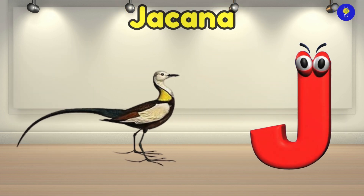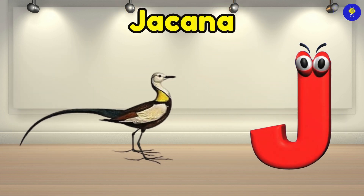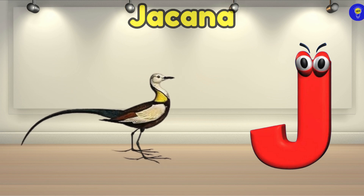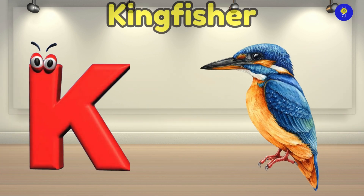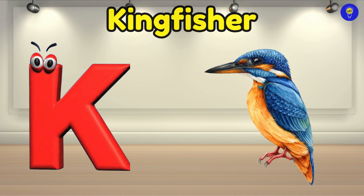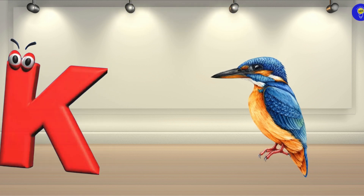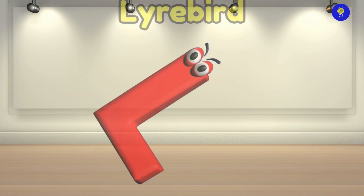J is for jacana. Juh, jacana. K is for kingfisher. Kuh, kingfisher.